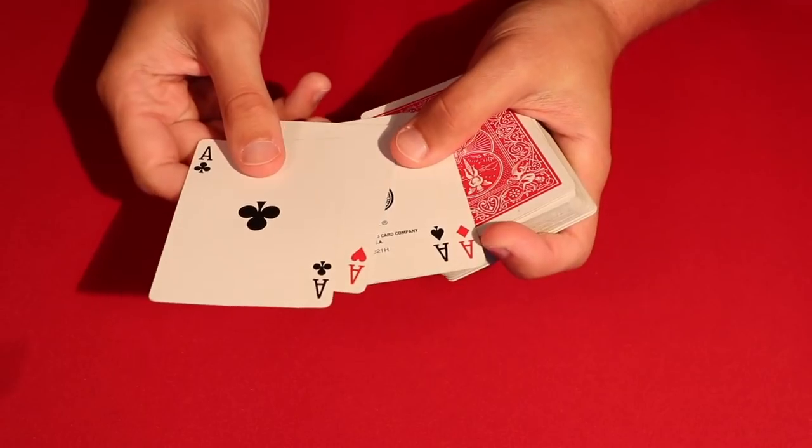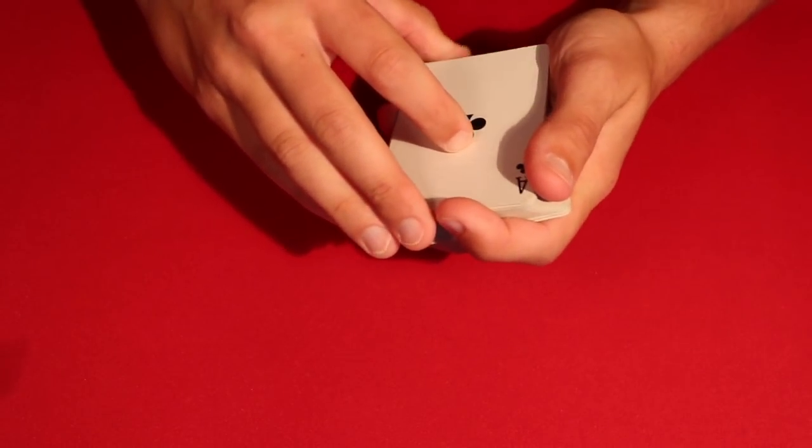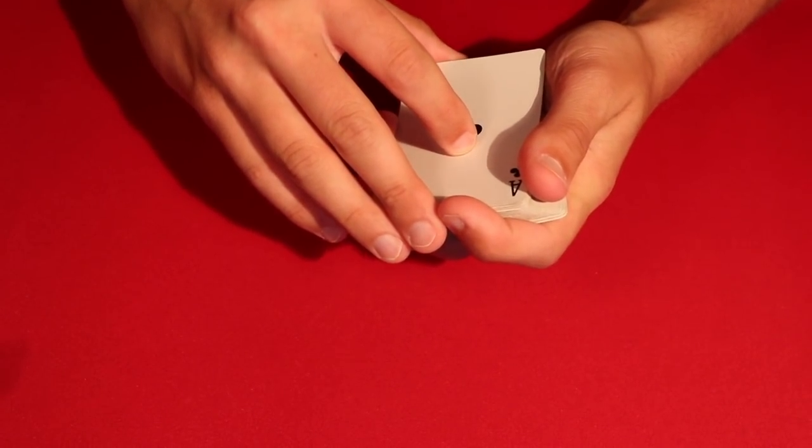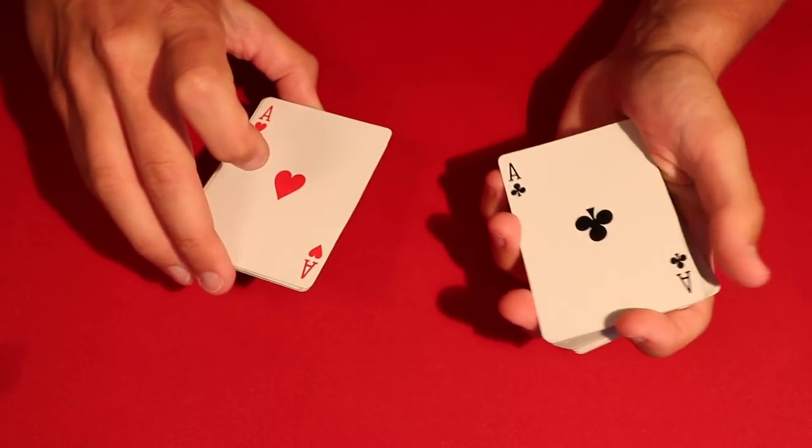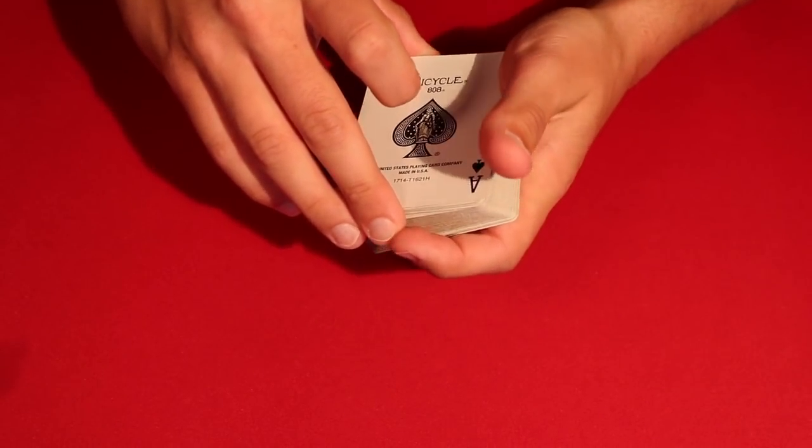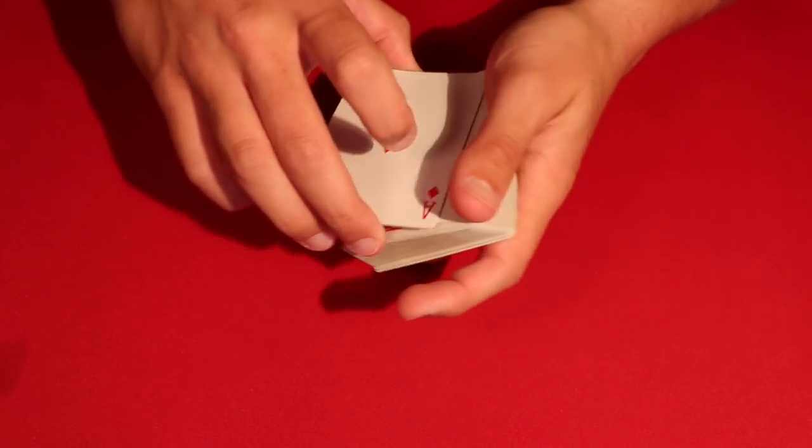Alright, so in order to start off this trick, all you want to do is pull out the four aces. You can set these on top of the deck and then you can show your spectator. So what we're going to do is use the Ace of Clubs, the Ace of Hearts, the Ace of Spades, and the Ace of Diamonds.